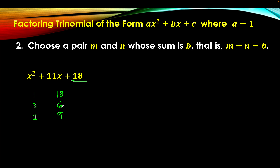Now let's look at the numerical coefficient of the middle term — it's positive 11. This means that both numbers are positive. Let's see which pairs give a sum of 11 when added. Since both numbers are positive, we have m plus n equal to b. We are looking for two integers whose sum is 11, or factors of 18 that when added give 11. The first pair: 1 plus 18 equals 19 — obviously wrong.